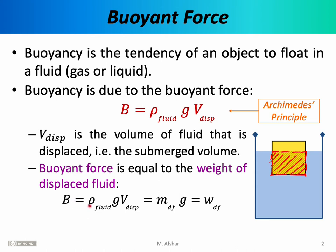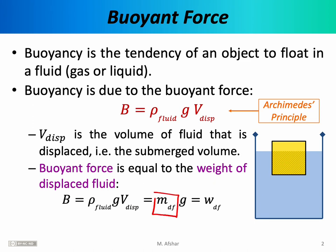We know that buoyancy is equal to rho times g times V. We also know that rho times V is equal to mass — we define density as mass divided by volume, so rearranging gives us rho times V equals mass. Since we are talking about the density of the fluid and the volume of the fluid that is displaced, what we really have here is the mass of the displaced fluid. And since mass times gravitational acceleration is simply weight, this becomes the weight of the displaced fluid. For most of our calculations, however, we'll be using the modern form of the buoyancy equation.